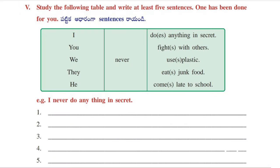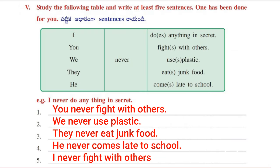Let's move on to roman number five. Here one table is given. We have to make our sentences with the help of this table. One example is given for us: I never do anything in secret. Next one: You never fight with others. Next: We never use plastic. Next: They never eat junk food. Next: He never comes late to school. Last one: I never fight with others.